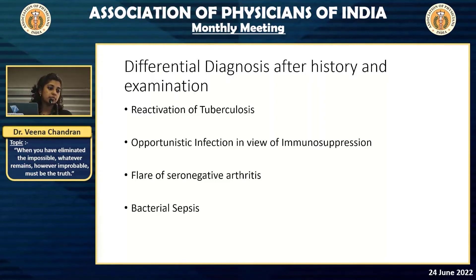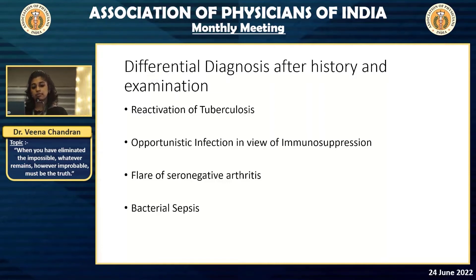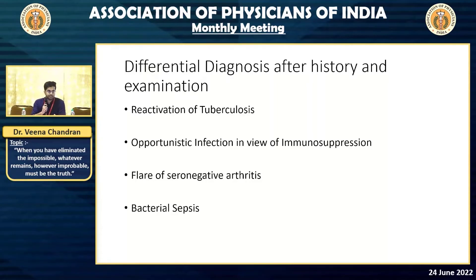Our primary suspicion was sepsis. The key factor was that he was immunosuppressed, having been on DMARD therapy before. He was on immunomodulators. He had developed psoriasis and was evaluated at our hospital. His workup confirmed the diagnosis, for which he had completed treatment. As his condition was deteriorating, he was admitted immediately.